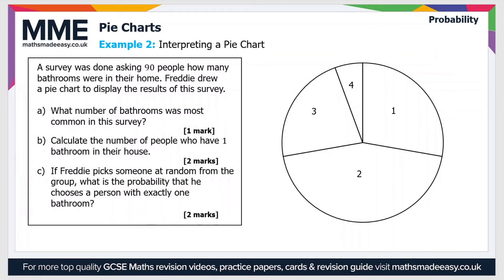So moving on to the second example now. A survey was done asking 90 people how many bathrooms were in their home. Freddie drew a pie chart to display the results of this survey. Part A: What number of bathrooms was most common in this survey? Well the largest category as we can see from the pie chart is two. So therefore that is the most common number of bathrooms.